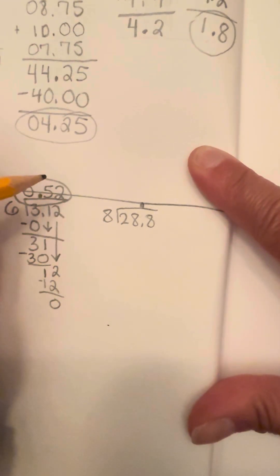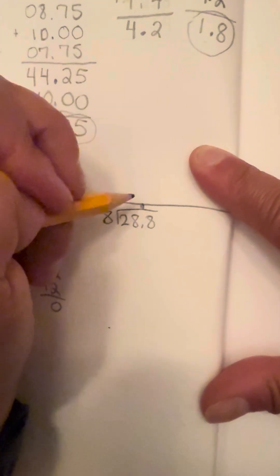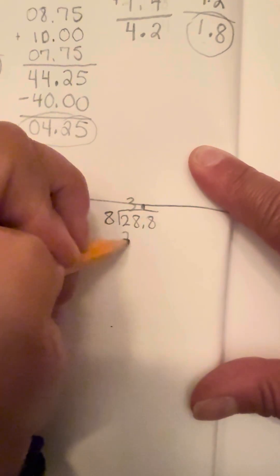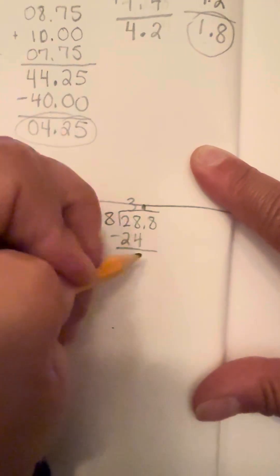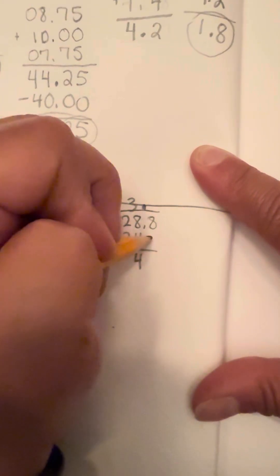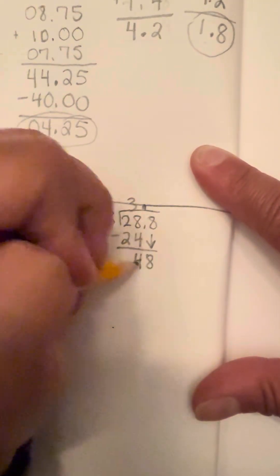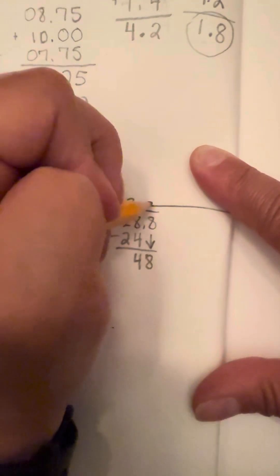Eight goes into 28 a total of three times without going over. So eight times three is going to be 24. So you're going to subtract 24 from 28, which is going to leave me with four. And then we're going to bring the eight that's there down. And then eight goes into 48 a total of six times.